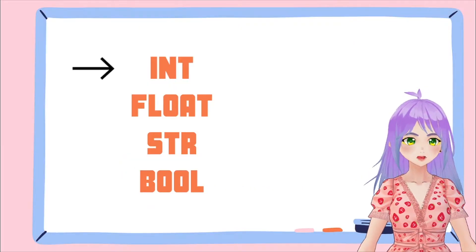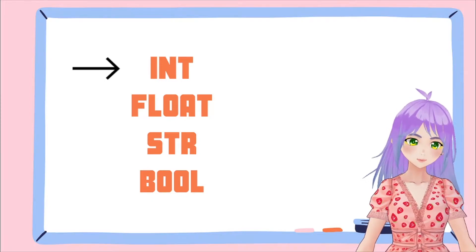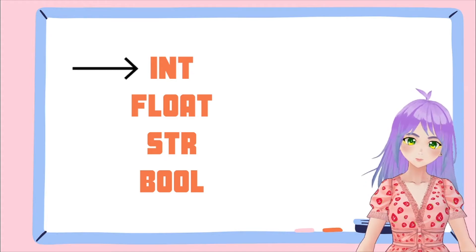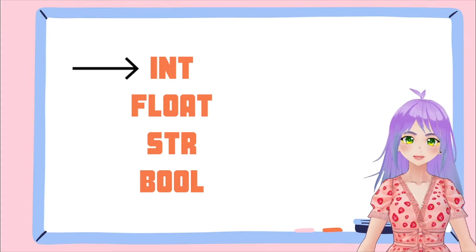In Python, we have four main data types. We have int, float, str, and bool.